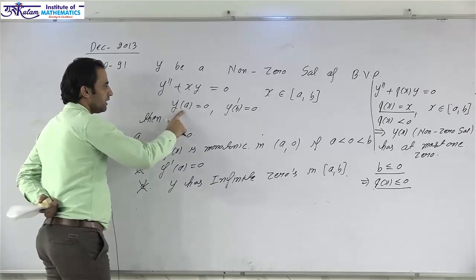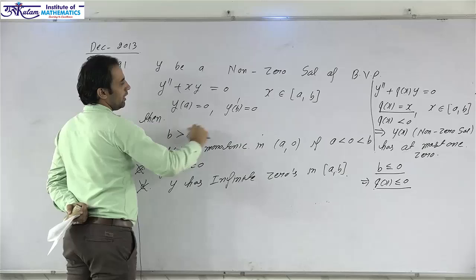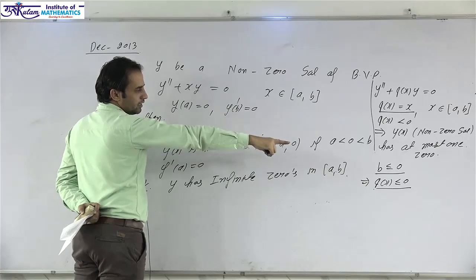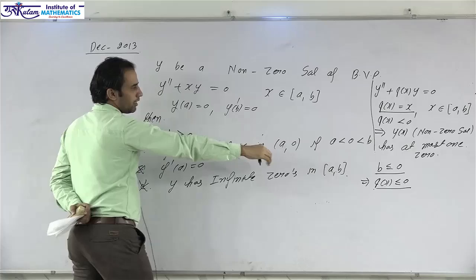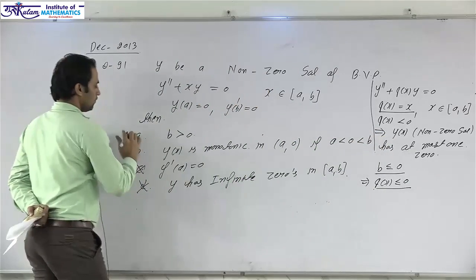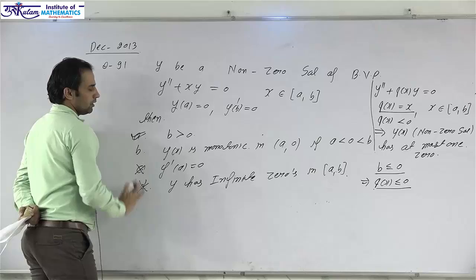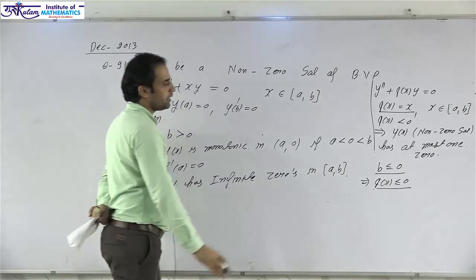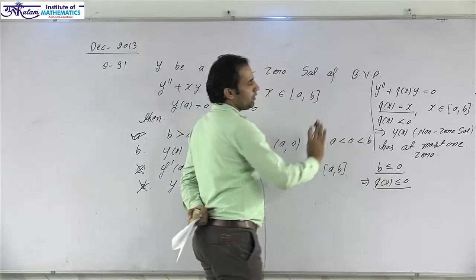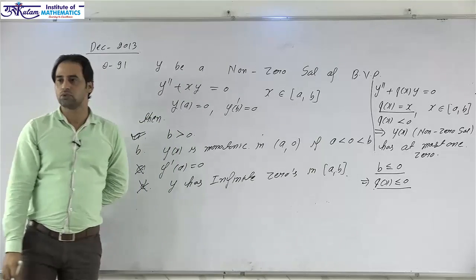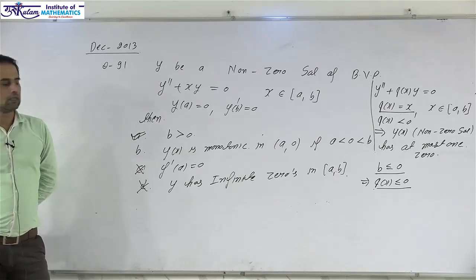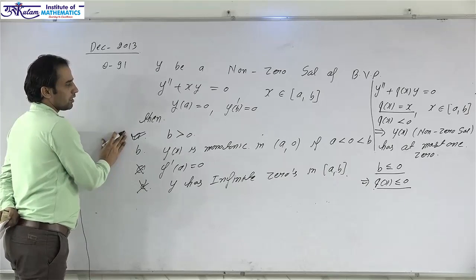By this property, if b ≤ 0, the non-trivial solution has at most one zero on [a, b]. But we are already given that y(a) = 0 and y(b) = 0, which would give two zeros — a contradiction. Therefore, b must be greater than 0, and option A is correct.